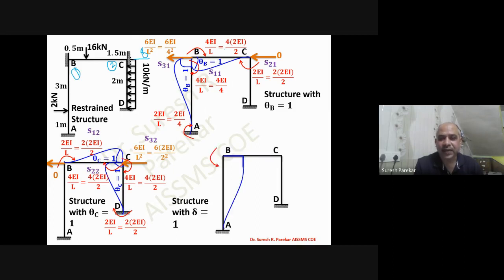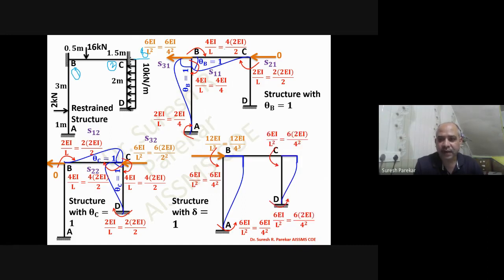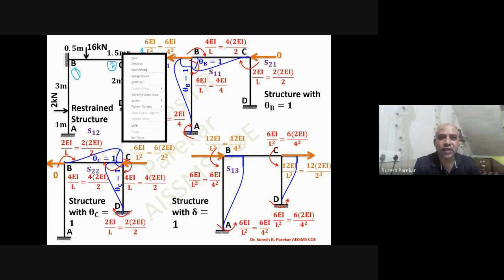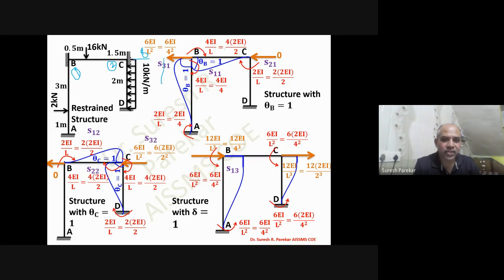Applying Δ = 1 to both columns: for column BA (length 4 m), we get 12EI/4³; for column CD (length 2 m, moment of inertia 2I), we get 12EI/2³. These contributions give S13 = minus 6EI/4² (anti-clockwise), S23 = minus 6EI/2² with similar sign. S33 is the total reaction.